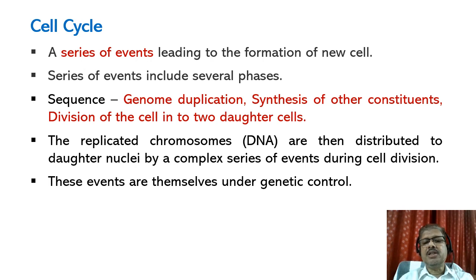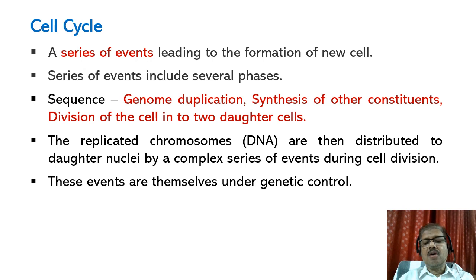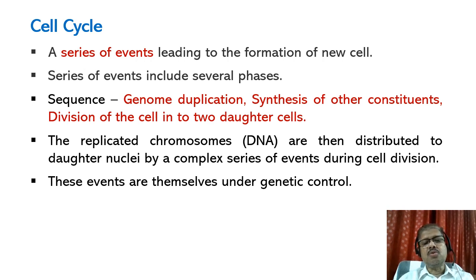The cell eventually divides into two daughter cells. Although cell growth in terms of cytoplasmic increase is a continuous process, DNA synthesis occurs only during a specific stage in the cell cycle. The replicated chromosomes are then distributed to daughter nuclei by a complex series of events during cell division, and these events are themselves under genetic control.